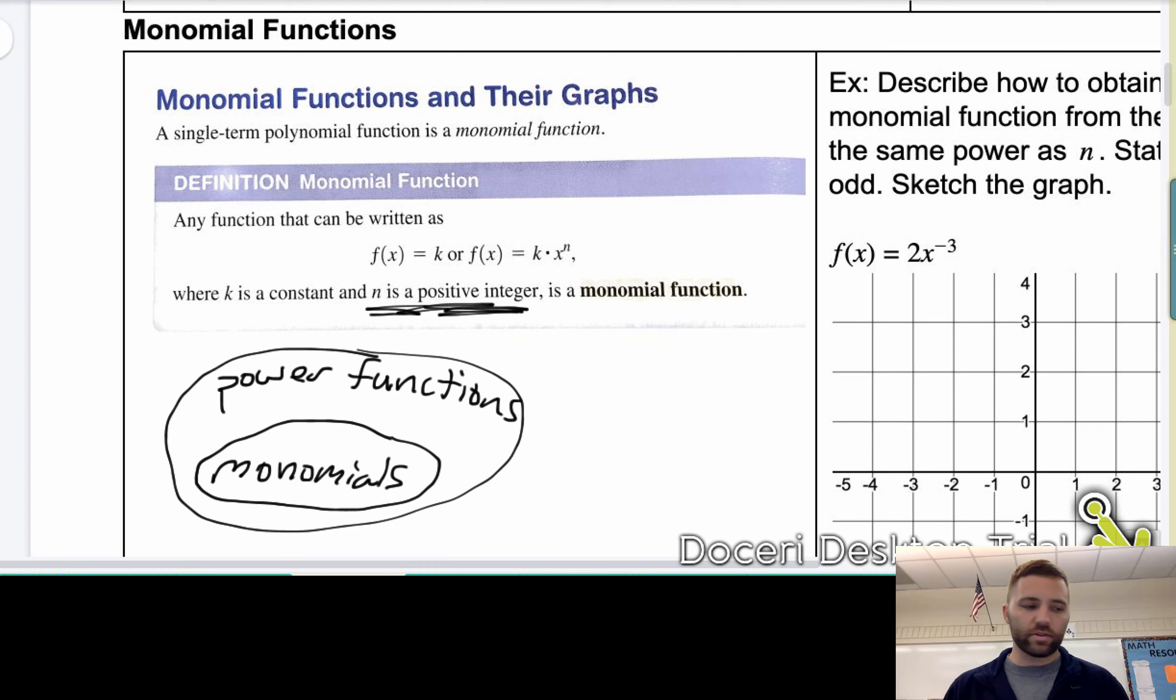Here are some examples of monomials. You know, things like f of x equals 7, f of x equals 1 third x to the 12, f of x equals π x to the 33rd power. Those are all examples of monomial functions. All right.